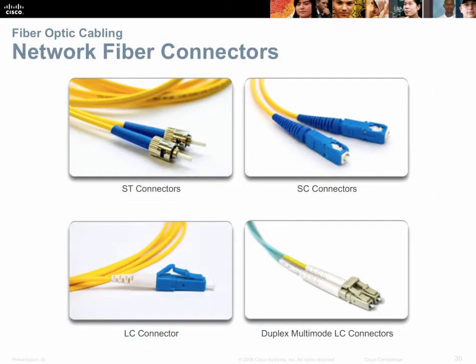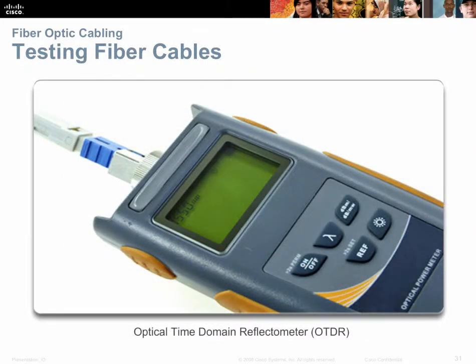Many different connectors are available for fiber optic cabling. ST connectors are the oldest, sometimes called barrel connectors. Newer connectors are square, avoiding confusion from mismatched placements. These include SC and the smaller LC connector, and the newest LC duplex, which affixes both the send and receive LC connectors into a single connector body. A signal tester for fiber optic cable measures dB loss and dB gain on the light signal as it travels down the cable.